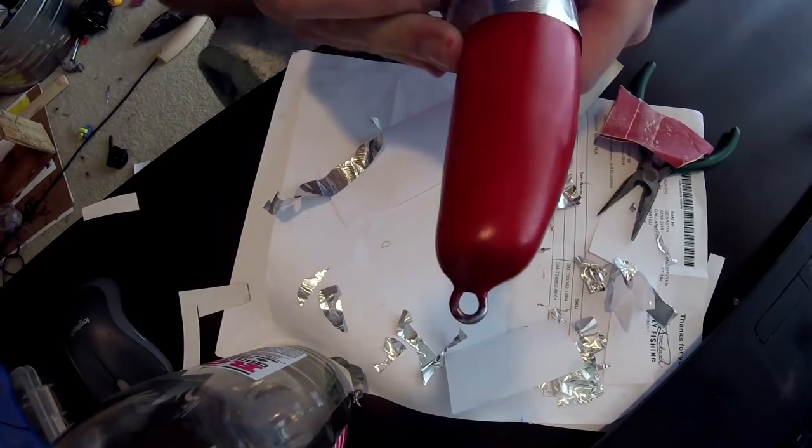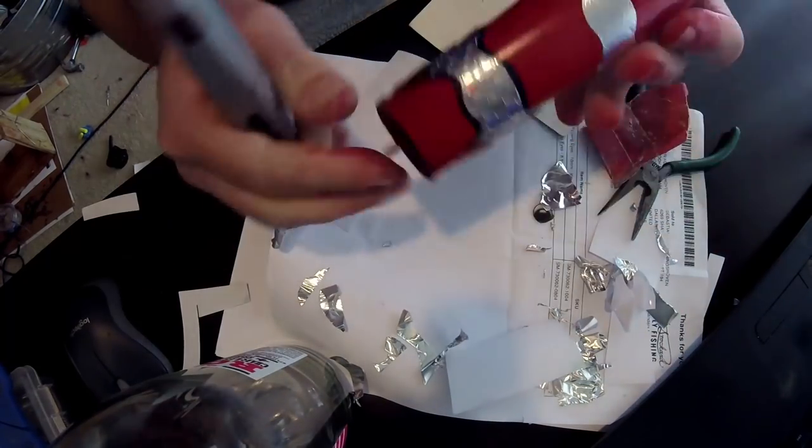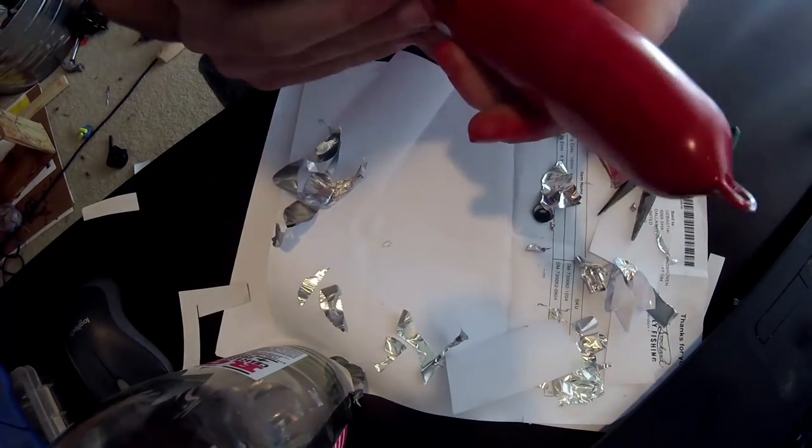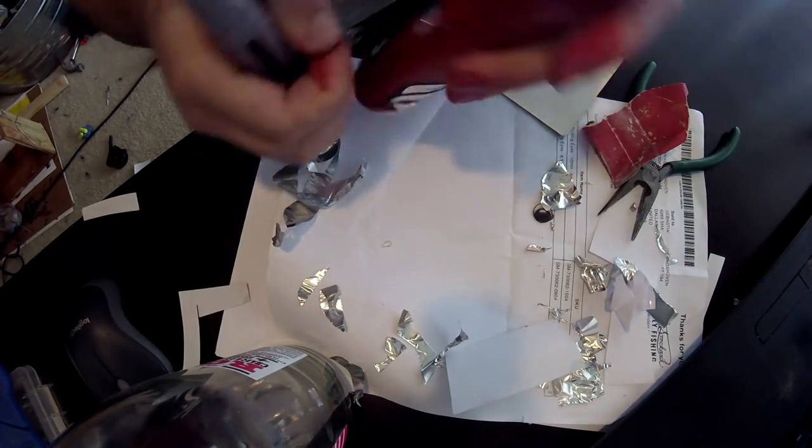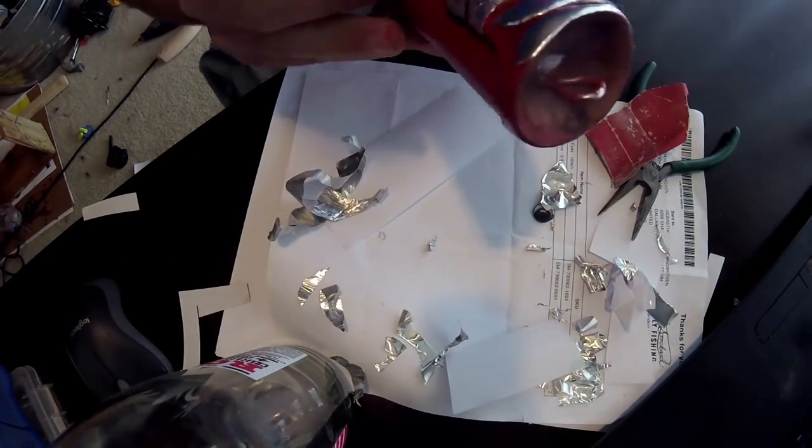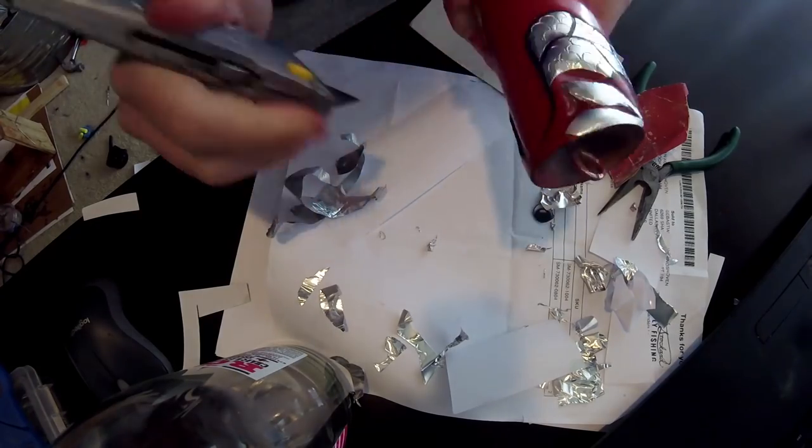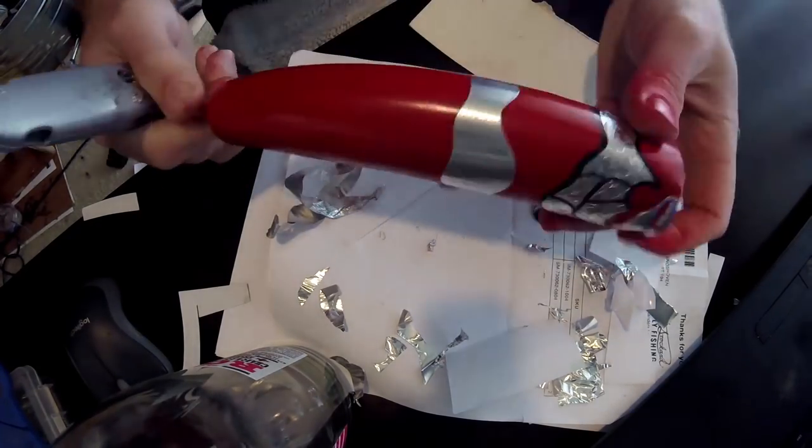Cool thing is we can actually adjust that because the Nemo stripe pattern isn't exactly straight, so it allows us to work around that a little bit and cut out the bubbles in the foil. And there you have it, that looks really cool, and that's just with red.